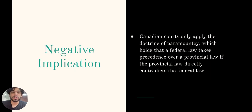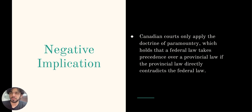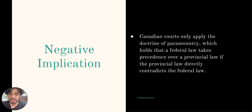In Canada, the doctrine of paramountcy only holds that federal law takes precedence over provincial law if the provincial law directly contradicts the federal law. The doctrine of covering the field has been rejected. That doctrine held that when a federal law is passed on a particular subject, it precludes the provinces from enacting laws on the same subject. However, the federal parliament can still specify that the federal law should take precedence over provincial law in a particular situation, even if the two laws do not directly contradict each other.